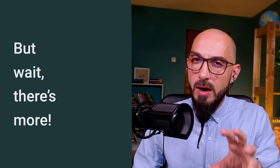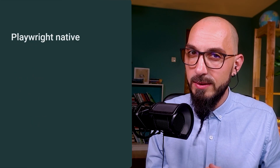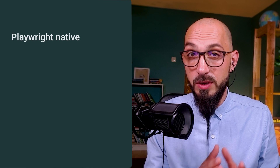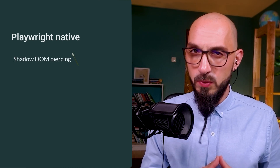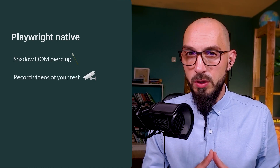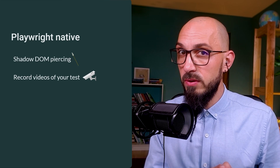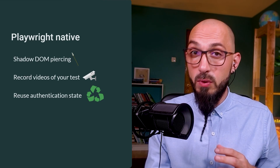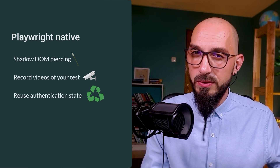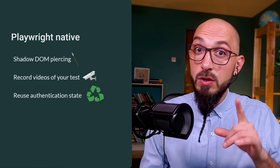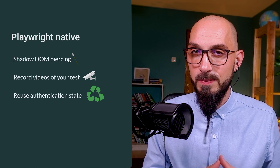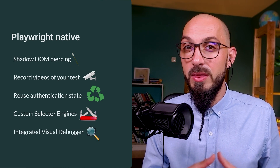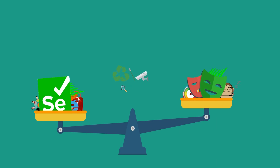There are a number of features which are native to Playwright but require additional work or libraries to work in Selenium. Shadow DOM piercing — it sounds like a Mortal Kombat move, but it's actually a tricky piece of a web page. Recording videos of your script execution — useful when you run them on a remote server but still need to visually check what happened. Reusing the authentication state — you can log in once using forms, clicks, and types, then save a file with the browser state after login, and load that state later without any clicks or types. You can also implement custom selectors in Playwright, and debug your tests with the integrated Playwright debugger.